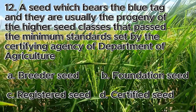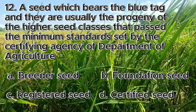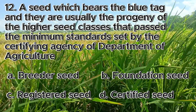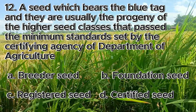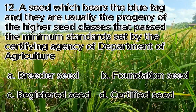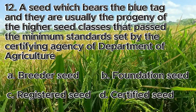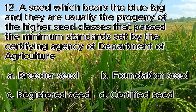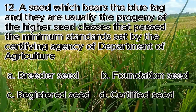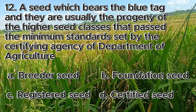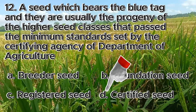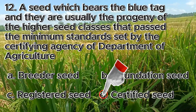Number 12. A seed which bears the blue tag and is usually the progeny of higher seed classes that pass the minimum standards set by the certifying agency of the Department of Agriculture. A. Breeder seed, B. Foundation seed, C. Registered seed, D. Certified seed. The answer is letter D, certified seed.